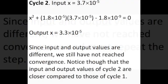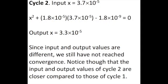For cycle 2, we use the output of the first cycle as the input. So the input x is 3.7×10⁻⁵. This results in an output x value of 3.3×10⁻⁵.